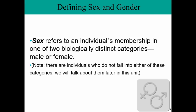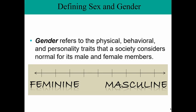When we talk about your sex, we're talking about what's going on with your body — your physical, biological condition. Gender, then, refers to physical, behavioral, and personality traits that society considers normal for male or female members. For the vast majority of us, our sex and gender line up, but for many of us they don't. Sex is about what your body looks like; gender is about your behavior.